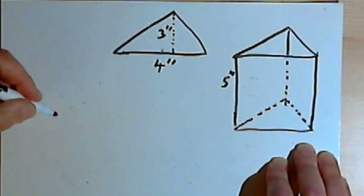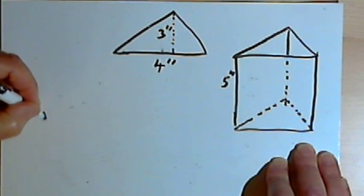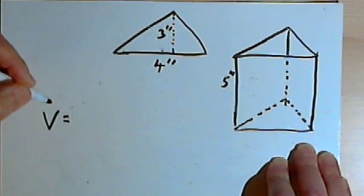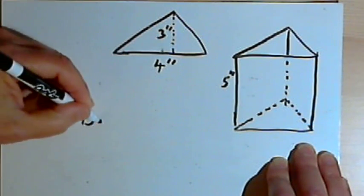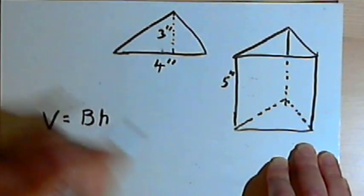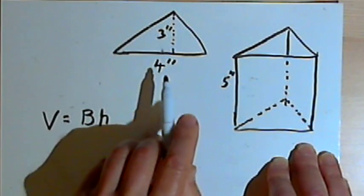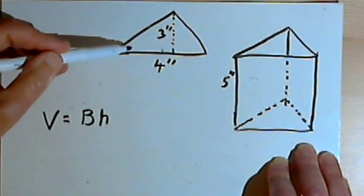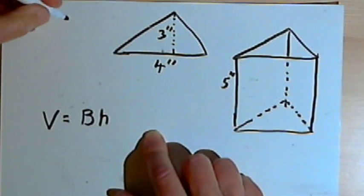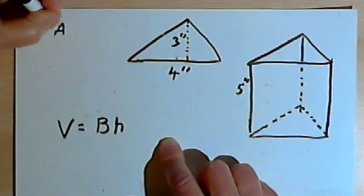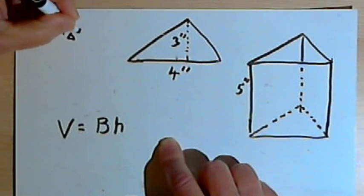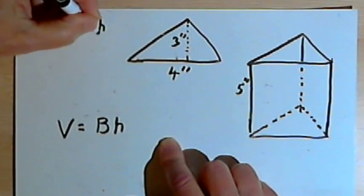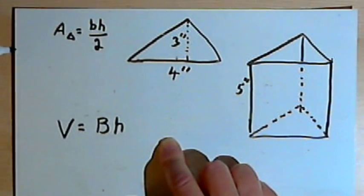So the formula we're going to use again is that the volume of this prism will equal the area of the base times the height. We know what the height is, but we have to find the area of the base. The base is a triangle. We know the formula for the area of a triangle is the base times the height divided by 2.